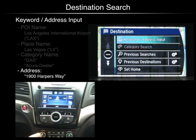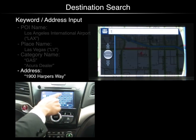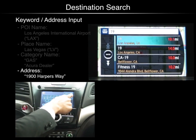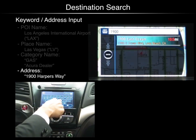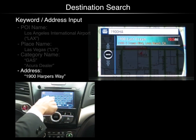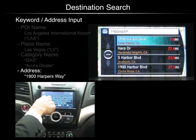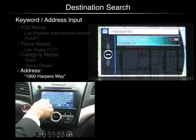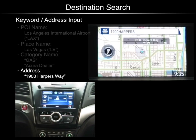To search for a destination using an address, push enter to select keyword address input. Use the keypad to input the category. Select it by pushing enter.